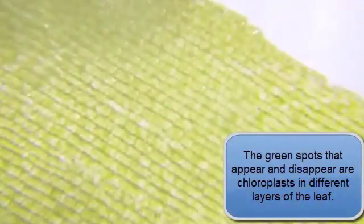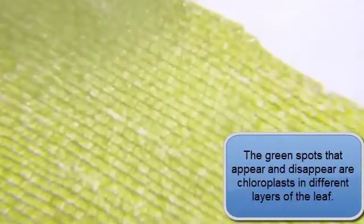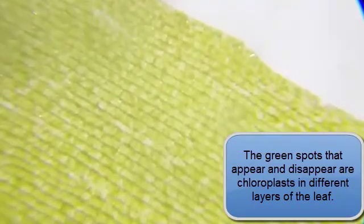So, as I focus up and down a little bit, different areas of the, you can see spots in different areas of the cell. And that's because the cells aren't flat, they're three-dimensional. So, as I am focusing up and down, you're actually seeing chloroplasts in different layers of the plant itself.